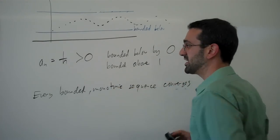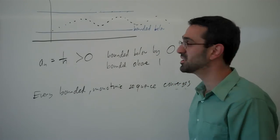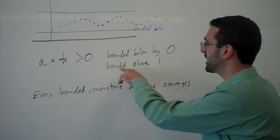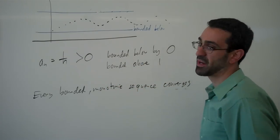So a nice example of that is this 1 over n sequence, which we can tell is going to converge to 0 as n gets large. And as we can see here, it is monotonic decreasing and bounded below.